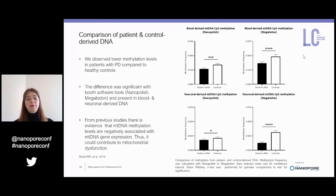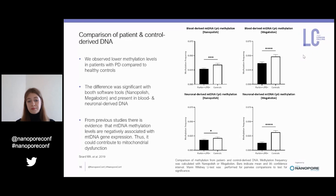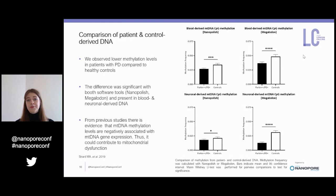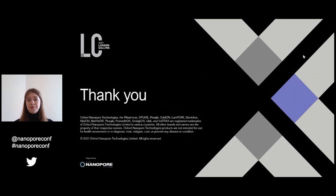From previous studies, there is evidence that mtDNA methylation levels are negatively associated with mtDNA gene expression. Therefore, the altered mtDNA methylation observed in patients could contribute to mitochondrial dysfunction and thereby to PD pathogenesis. Despite our small sample size, we observed a significant difference in PD patients versus controls, highlighting the importance of further investigating the underlying molecular mechanisms and their implication in Parkinson's disease. Additionally, we are expanding our pipeline to include non-CpG modification types, such as hydroxycytosine methylation or adenine methylation, which may be especially relevant in the context of mitochondrial DNA modification. Thank you very much for your attention, and I look forward to your questions and comments.